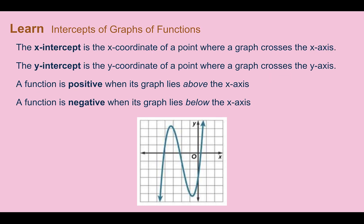The x-intercept is the x-coordinate of a point where a graph crosses the x-axis. On the graph shown here there are three x-intercepts because the graph crosses the x-axis three times. The x-intercepts are at negative 4, negative 2 point something, and maybe around 0.25.